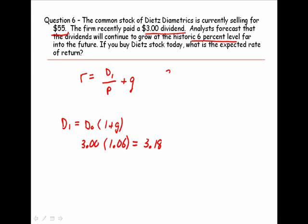So we simply take $3.18 divided by the current price of 55, add the expected growth rate, and we get 0.1178. So what is the expected rate of return on the stock? 11.78%.